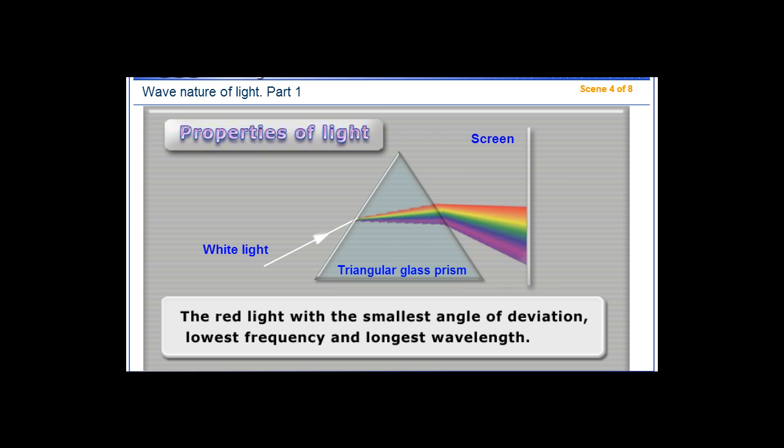The red light has the smallest angle of deviation, lowest frequency, and longest wavelength.